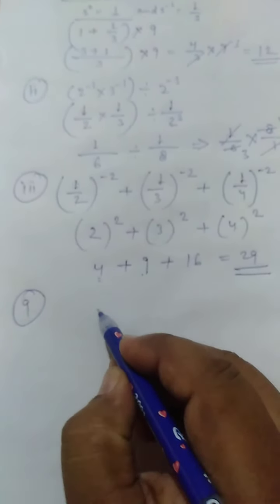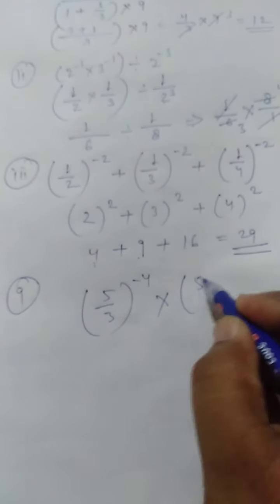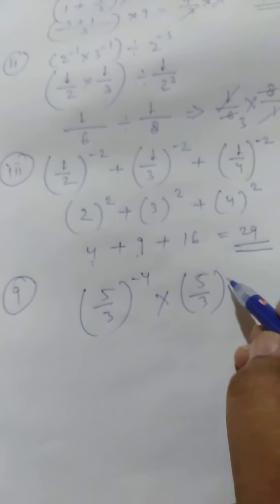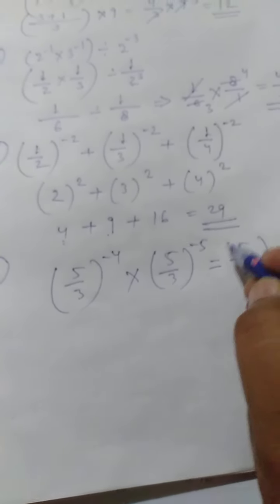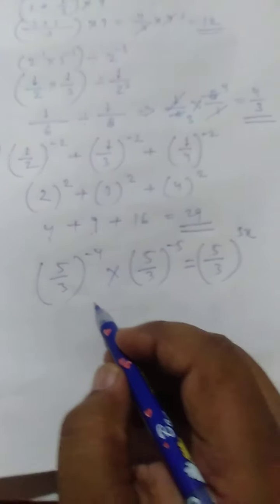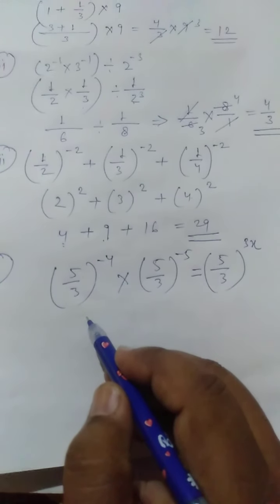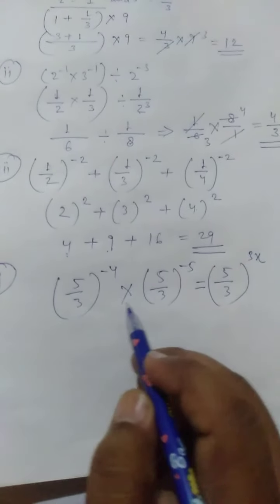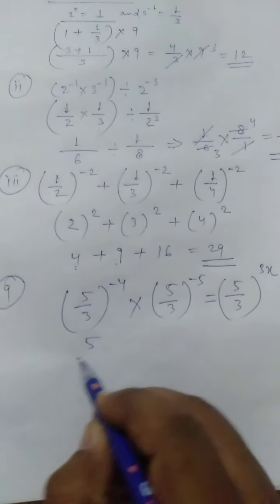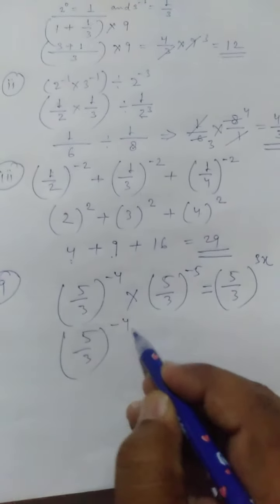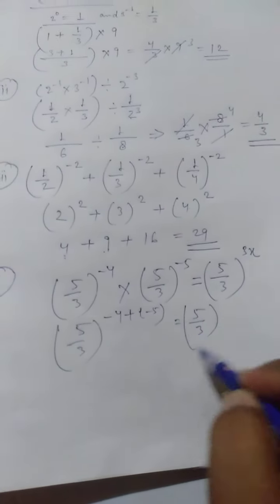Now look at question number 9. Find the value of x: 5 upon 3 whole power minus 4, into 5 upon 3 whole power minus 5, is equal to 5 upon 3 whole power 3x. Since the bases are the same, we add the powers. So 5 upon 3 to the power of minus 4 plus minus 5 equals 5 upon 3 to the power 3x.